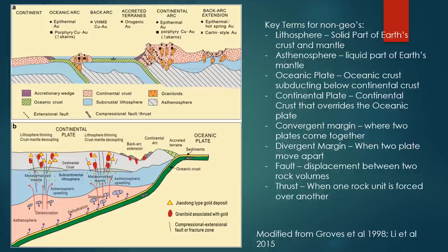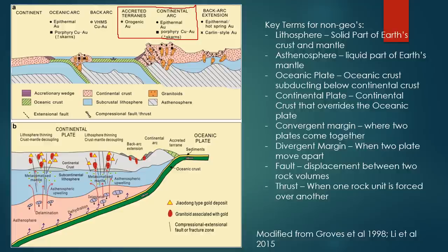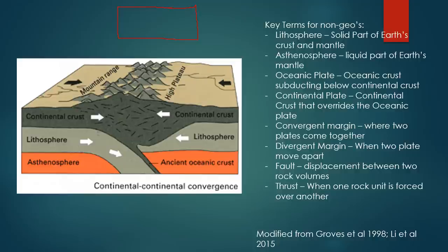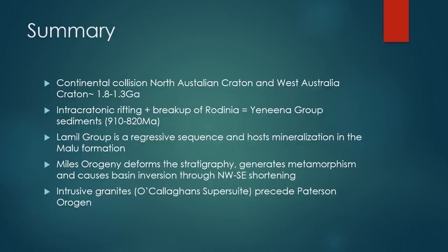In terms of overall tectonic setting, based on the observations and evidence presented, we are located within a continental arc or created terrain setting formed within a collisional plate boundary. Based on the evidence, we are located within a continental-continental convergence plate boundary, whereby two continental masses are colliding together. That is going to produce uplift, a mountain range, and thicken the continental crust, enabling the development of granites. So the regional tectonic setting for the Patterson is a continental-continental convergence setting.